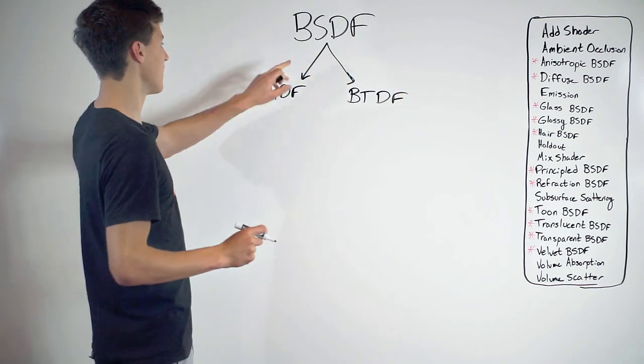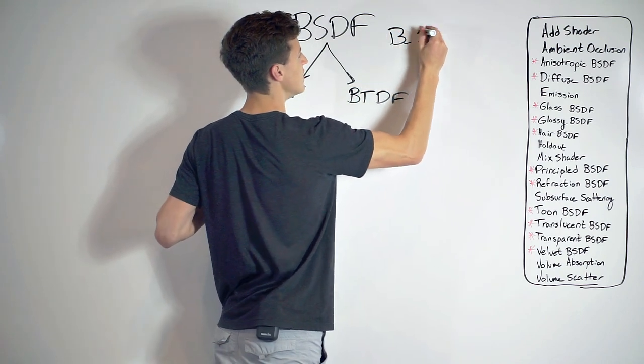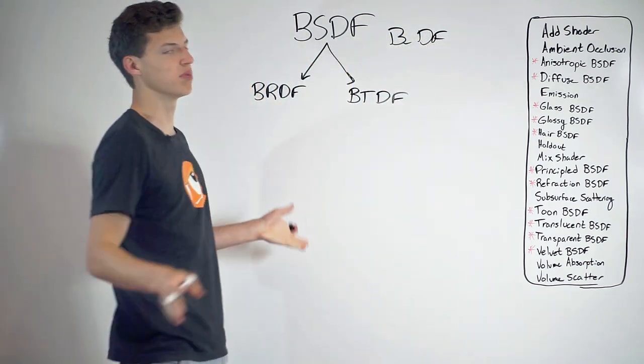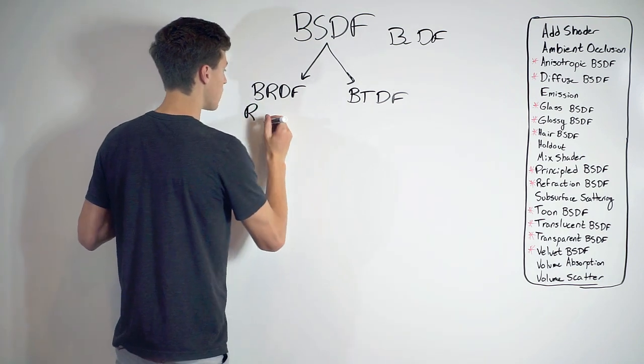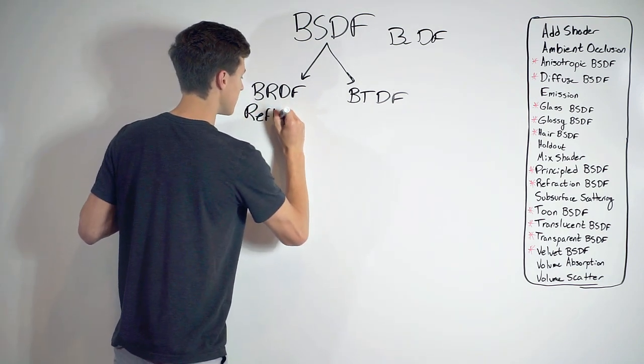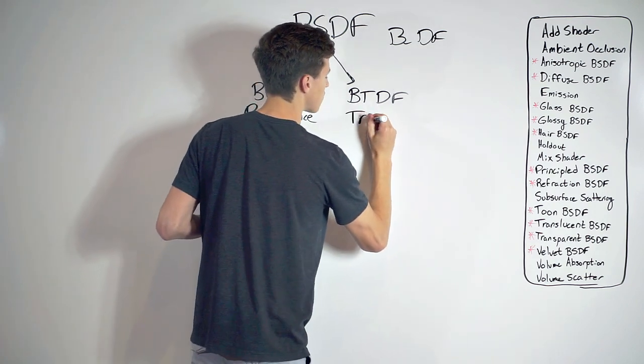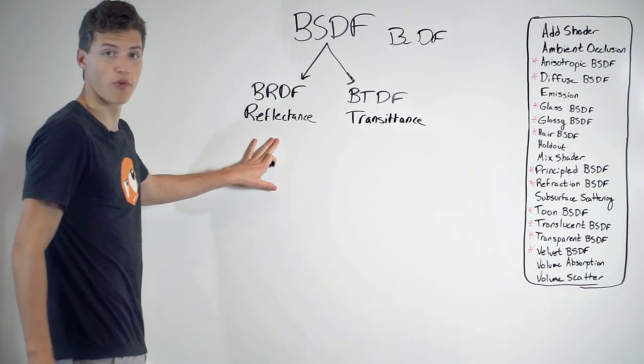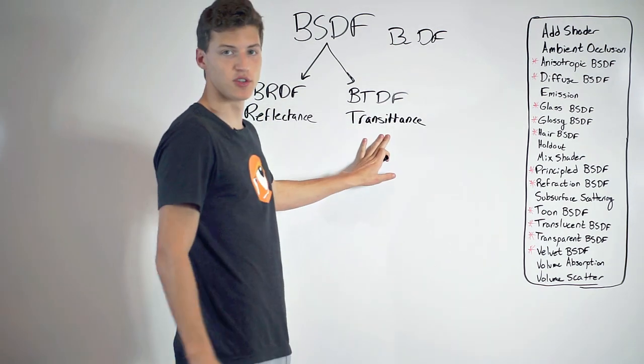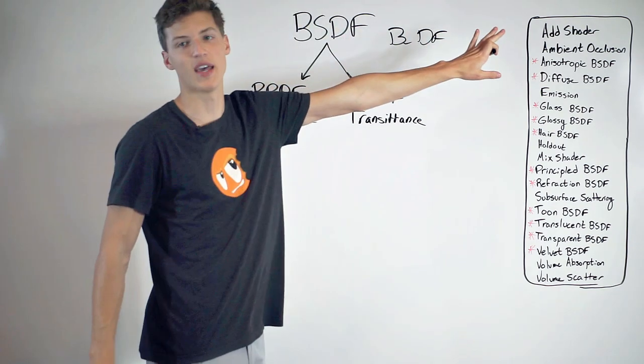Now, they're pretty similar. All that's changed is the second letter. It's basically just B blank DF. So they're all bi-directional blank distribution functions. In this case, this is the bi-directional reflectance distribution function. And this is the bi-directional transmittance. So this one deals with reflecting light, and this one deals with transmitting light. And both of these together, combined, make the BSDF.